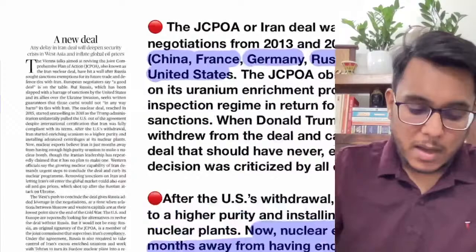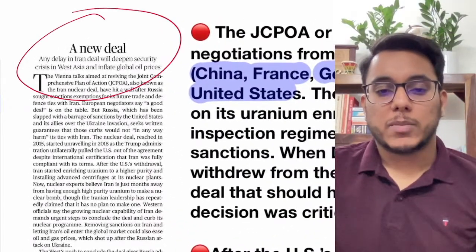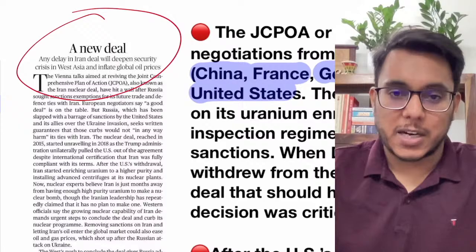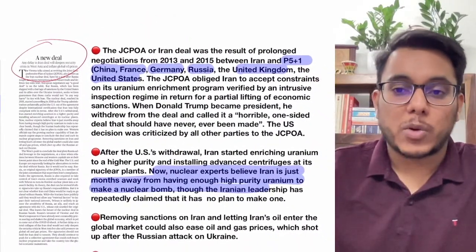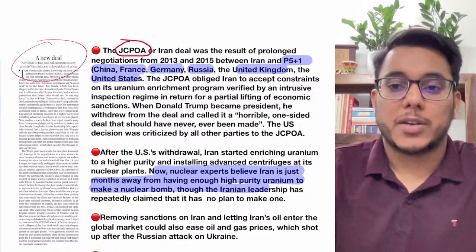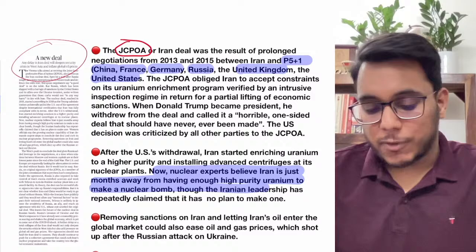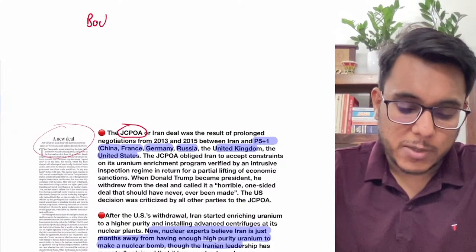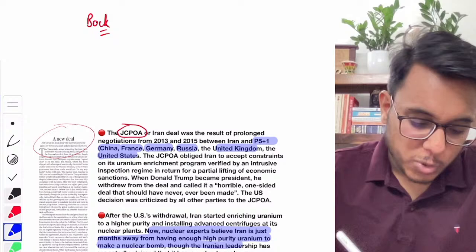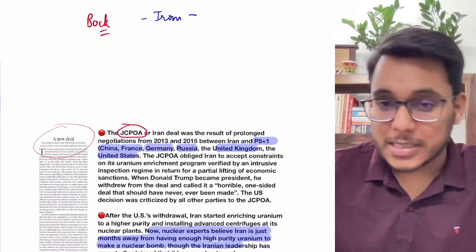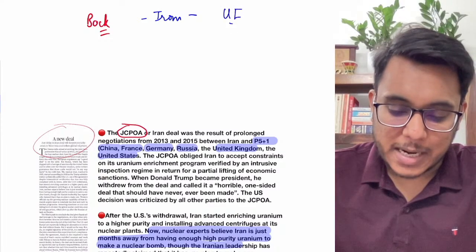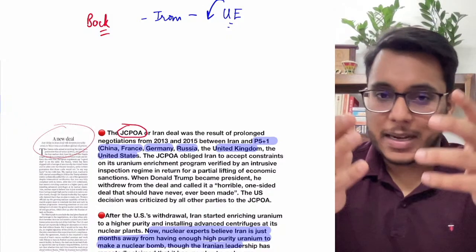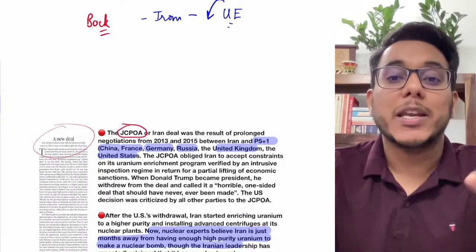The next article — 'A New Deal' — is from the Hindu newspaper's editorial and is important for GS Paper 2, international affairs. It talks about the Joint Comprehensive Plan of Action, or JCPOA. The background: Iran started its uranium enrichment program. Uranium is a radioactive material with dual use — it can be used for electricity generation or for creating nuclear weapons.